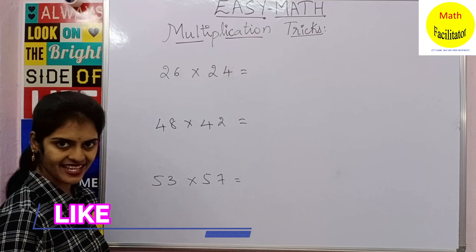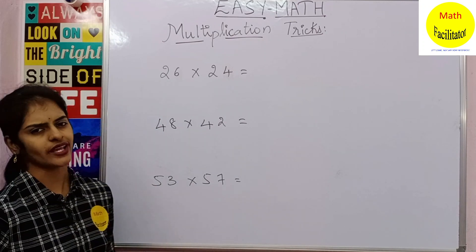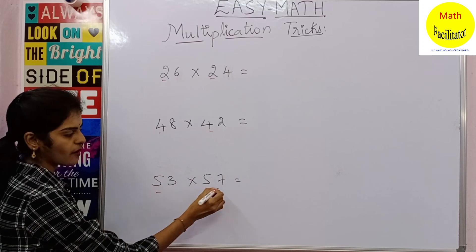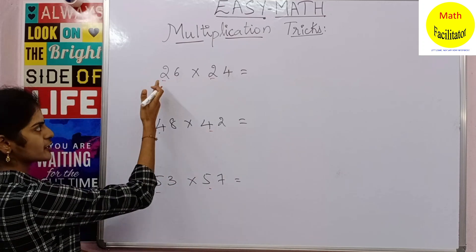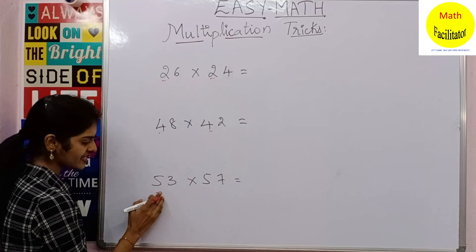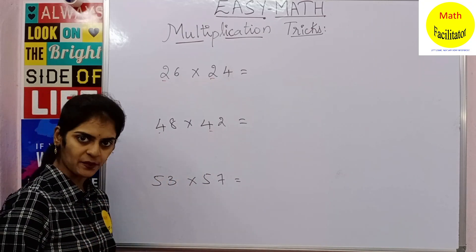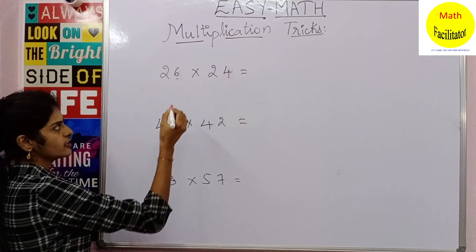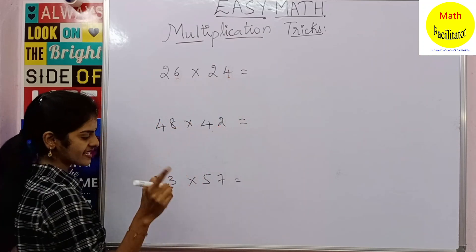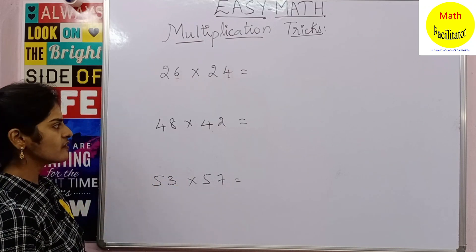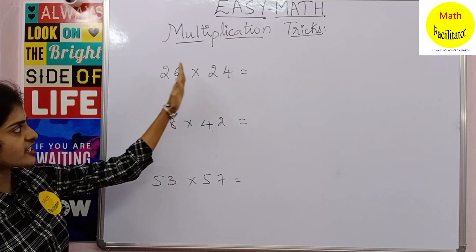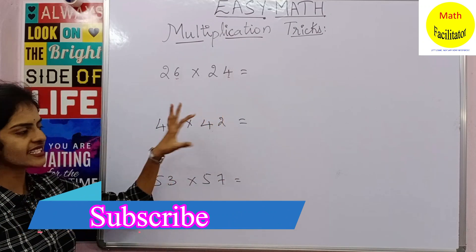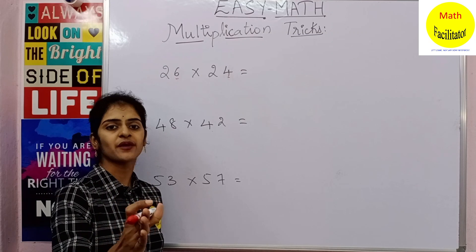You can see that I have taken a few examples, and in all these examples there is one thing in common. The tens digit is common in all the questions — you have 2 and 2, 4 and 4, 5 and 5, meaning the tens digit is the same for all numbers. Also, the sum of the units digits is 10: 6 plus 4 is 10, 8 plus 2 is 10, and 3 plus 7 is 10. When these two conditions are satisfied — same tens digit and units digits summing to 10 — you can use this technique and multiply within seconds.